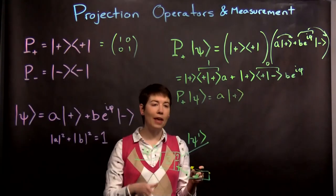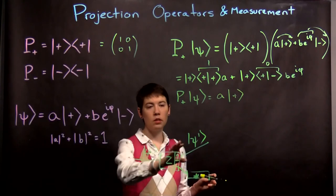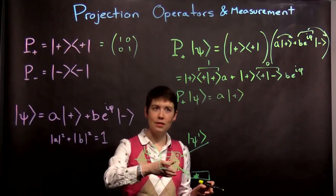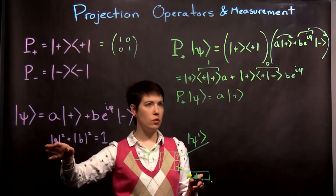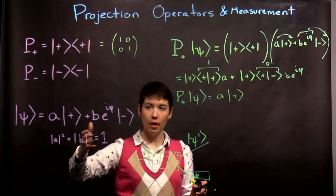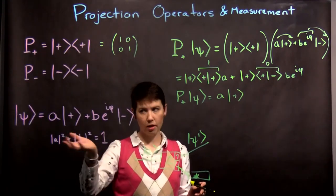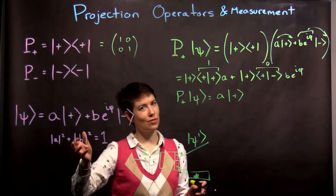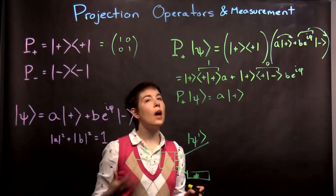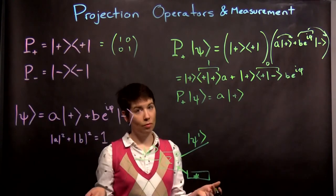Now, we can't call that psi prime because it's not normalized. It wasn't that a was equal to one. It was that the magnitude of a squared plus the magnitude of b squared was equal to one. So we actually have to renormalize this.